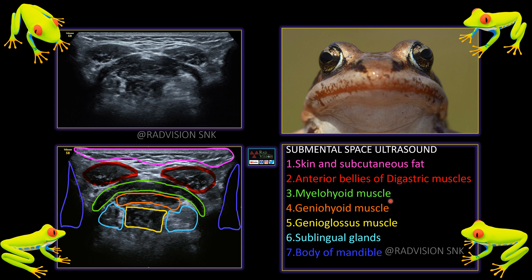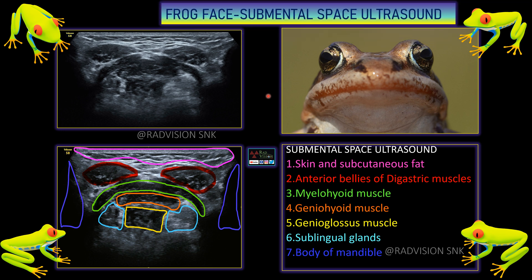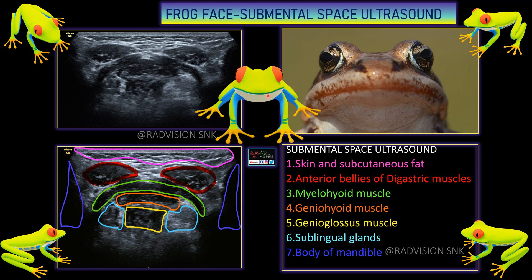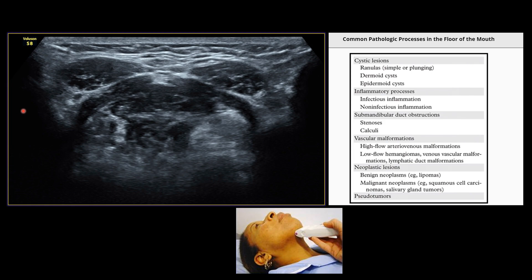As seen previously, these are all the various superficial to deep structures to remember in the frog face view or submental space ultrasound view. This is the typical frog face view. The probe position shown here is what we use for the submental space or floor of the mouth lesions.